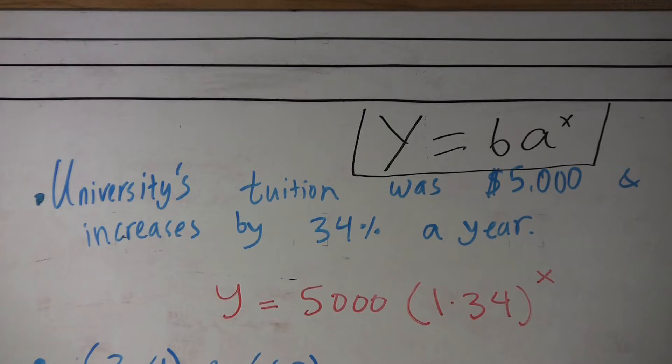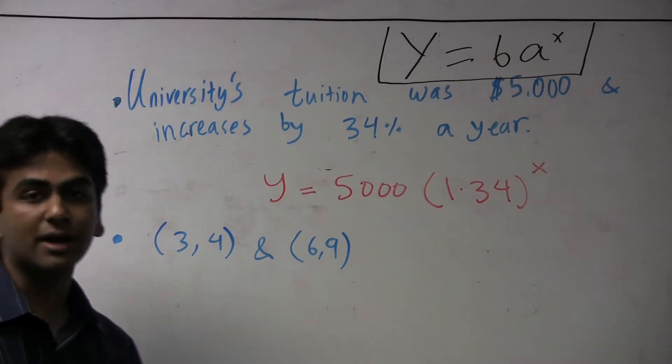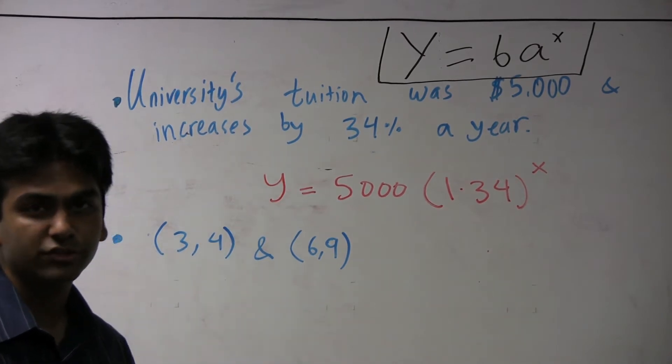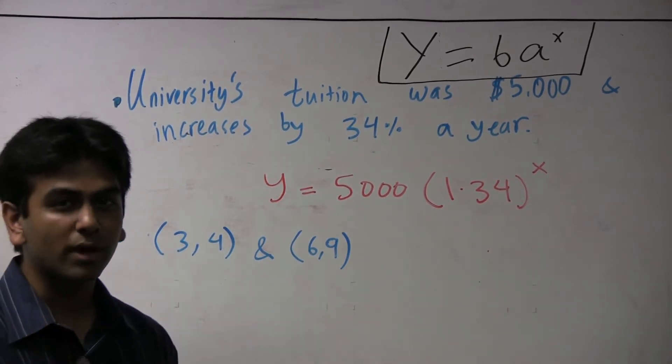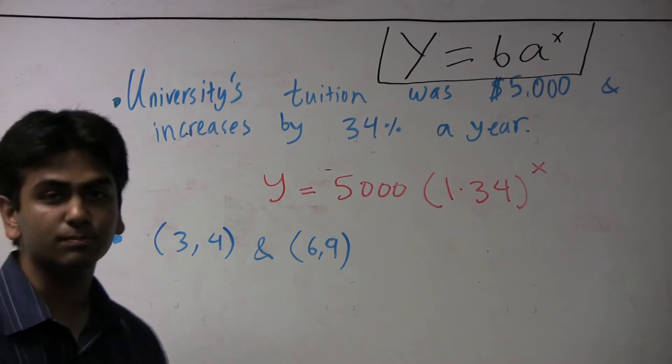Now let's take a more involved example. What if these two points are on a graph? What would the exponential function be? Notice that there can only be one exponential function that has both of these points on it.